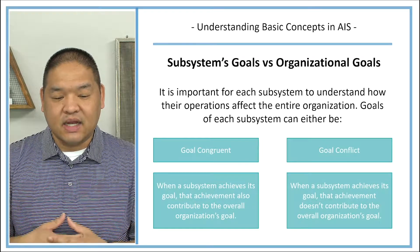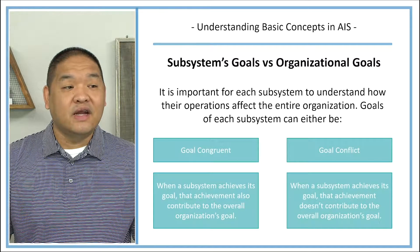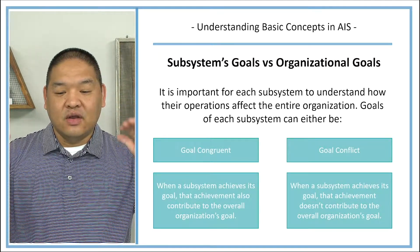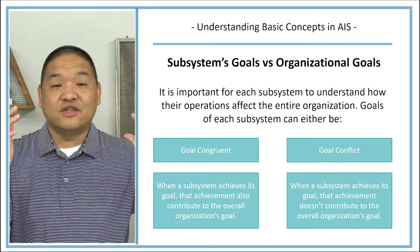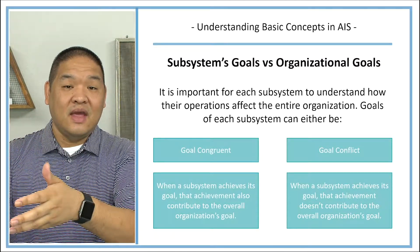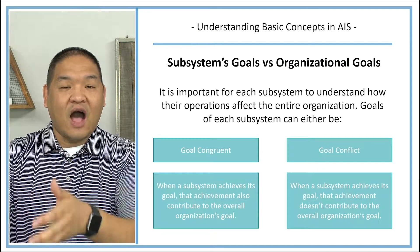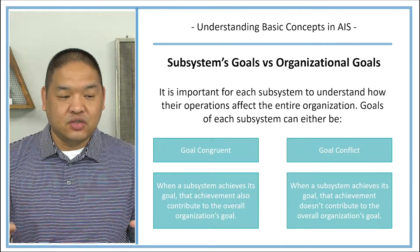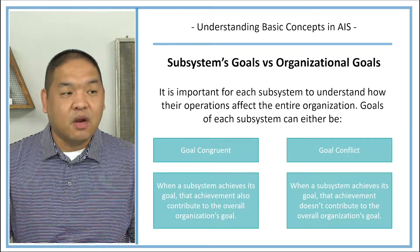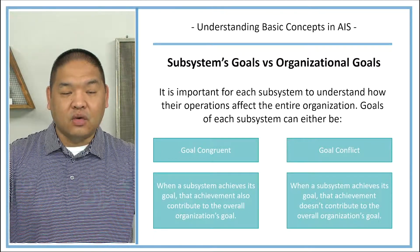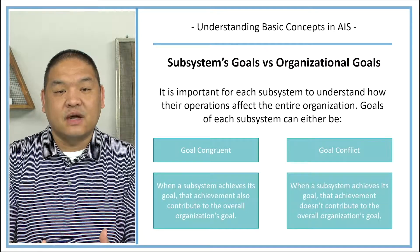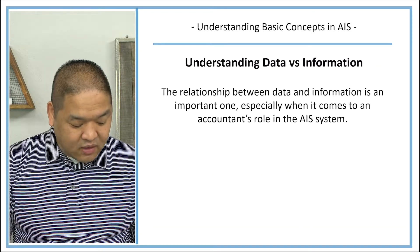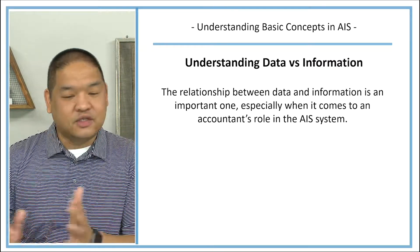Goal conflict is when a subsystem achieves its goal but that achievement doesn't really contribute to the overall organizational goals. For example, if sales and marketing takes all their salespeople on an expensive cruise every year regardless of whether they hit their targets, and sales are down 20 percent, having that party doesn't help the organization — it might actually work against the goal. We want each department's goals to be helping the entire system achieve its goals, because we're all working toward the same thing.